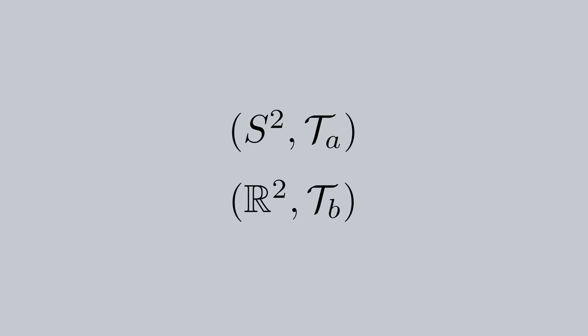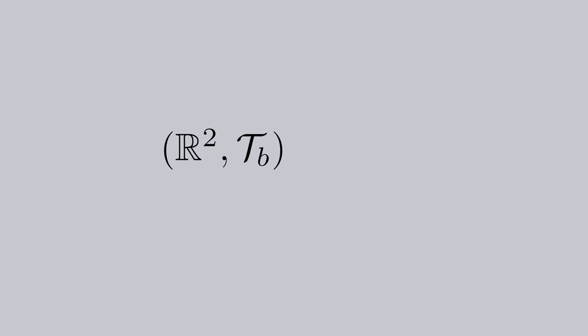So now, we can start off by thinking of S2 and R2 as topological spaces, endowed with their own topologies which I'll name tau A and tau B. It's best to start off with why R2 endowed with tau B is a topological space.